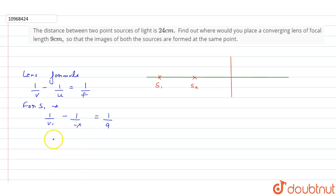And because it is a convex lens, a converging lens is a positive lens. So we can write 1 by v1 is equal to 1 by 9 minus 1 by x. That is our equation 1.